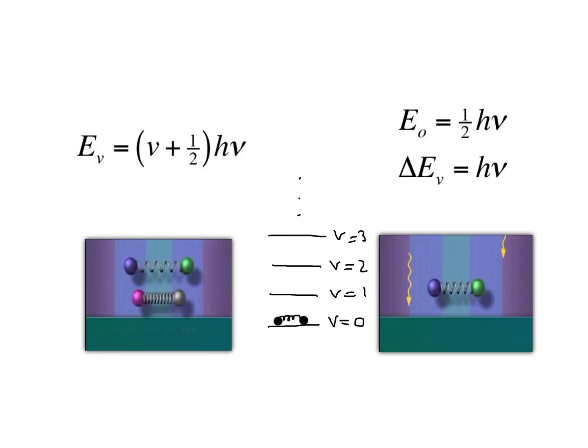The quantum number V can range from 0, 1, 2, so forth and so on, always in integer steps. Thus, we have a discrete set of vibrational energy levels.